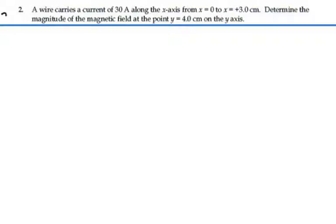Here's problem 32. A wire carries a current of 30 amps along the x-axis from x equals zero to x equals plus three centimeters. Determine the magnitude of the magnetic field at the point y equals four centimeters on the y-axis.